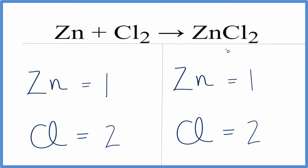Looking at the products, this zinc chloride here, ZnCl₂ — zinc always has a charge of plus two, chlorine has a charge of minus one. So two times minus one gives us minus two; that balances out, we have a net charge of zero, and that's our zinc chloride.